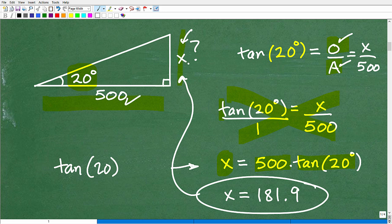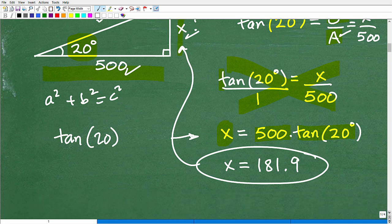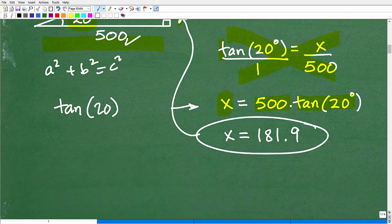Now, once you have this side and this side, then you can use other things like the Pythagorean Theorem to get the hypotenuse. Or you can use sine or cosine to get that side as well. But if you understand this, then effectively, this is your first primary lesson in trigonometry.